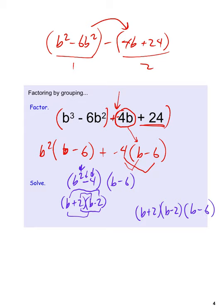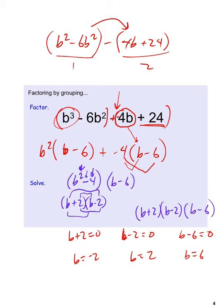To solve, we set each factor equal to 0: b plus 2 equals 0, b minus 2 equals 0, and b minus 6 equals 0. So b equals negative 2, 2, or 6 — three solutions and three x-intercepts, which is plausible for a third-degree polynomial.